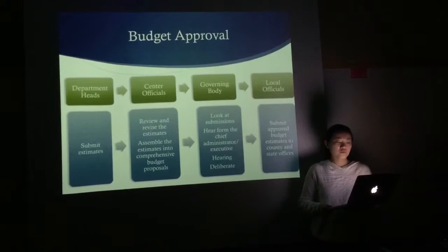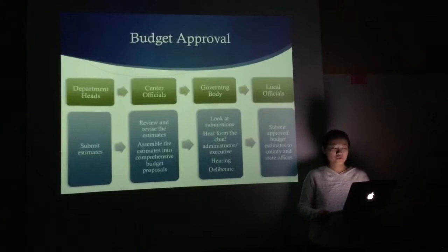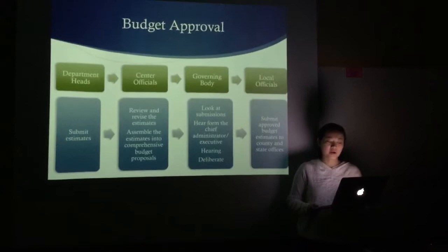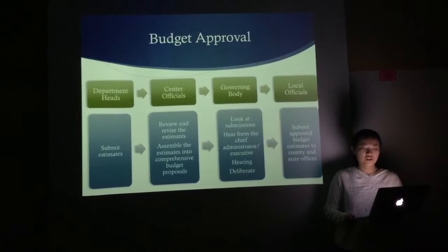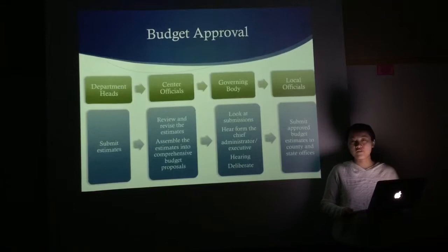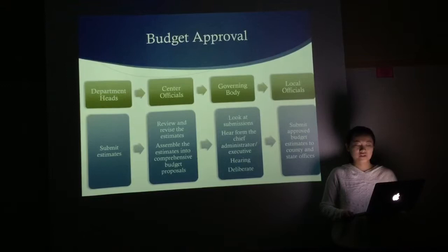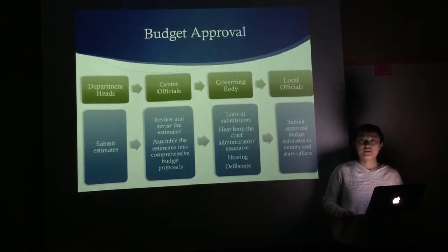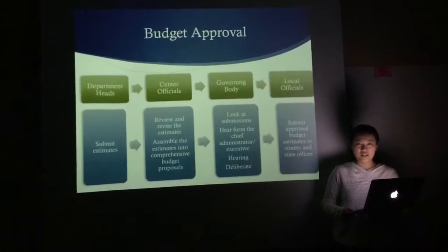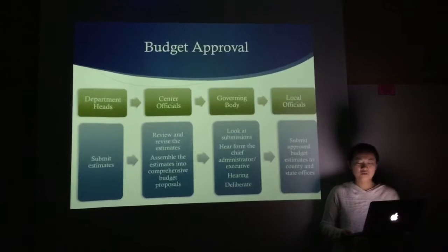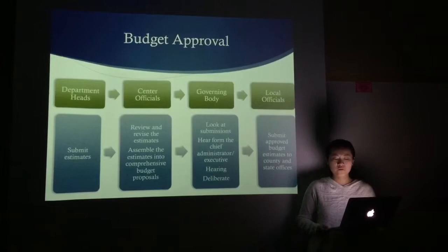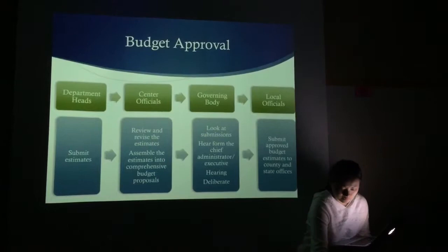Budget approval: The budget approval process begins when departments have submitted their budget estimates. Central officials review and revise the department estimates, then assemble them into comprehensive budget proposals for submission to the governing body and publication for citizens. The members of the governing body look at the departmental submissions, hear from the chief administrator or executive, listen to the public in and outside of hearings, and deliberate among themselves. Finally, local officials submit their approved budget estimates to county and state officials. In this process, we can see the transparency and accountability of local government. This is important because the budget process determines what citizens pay for and what they get from their local government. Through public hearings, local governments provide opportunities for citizens to share their views on taxes and services, thus increasing citizens' participation.